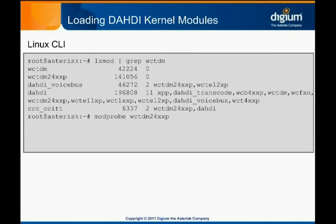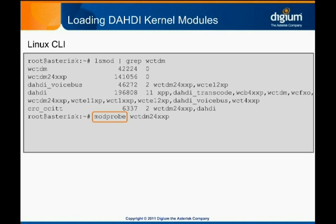We've now configured Dottie, but we haven't yet applied that configuration. Before we do, we need to make sure that the appropriate Dottie kernel modules are loaded. If you ran makeconfig when installing Dottie, this step should be done for you automatically. We can verify that the right kernel modules are loaded by running the Linux command lsmod, which stands for list modules. We should see at least one module labeled Dottie, and one that starts with WCT-DM. If these are not listed, you can load them manually by issuing the modprobe Linux command followed by the name of the module for the card you're using. For most Digium analog cards, we would issue modprobe WCTDM24XXP. Loading the module for your specific card will also load the Dottie.ko kernel module and any other modules that need to be loaded.